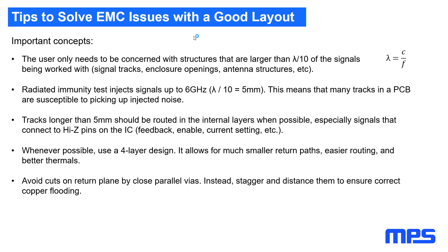We should only be concerned about structures that are larger than lambda/10 of the signals we work with — for example, signal tracks, enclosure openings, antenna structures, etc. The tracks on a PCB are capable of emitting EMC if their length is greater than lambda/10 of the frequency, which results in an effective antenna. Radiated immunity tests inject signals up to 6 GHz, where lambda/10 equals 5 mm. This means tracks of only 5 mm can receive or transmit as an antenna. EMC is tested in areas up to 6 GHz for gigahertz wireless LAN.